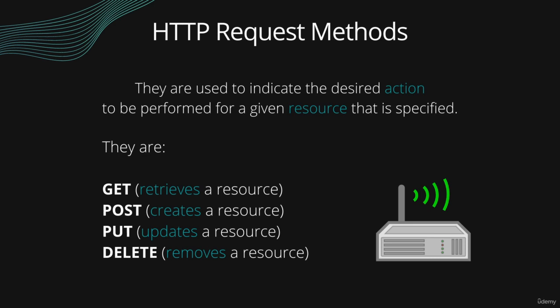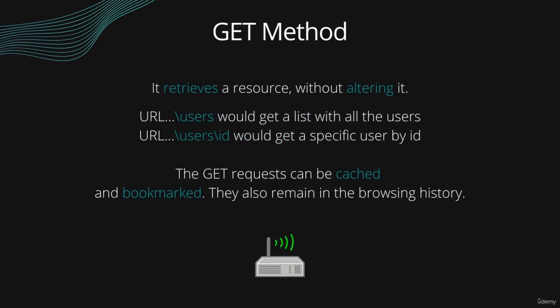Let's list all these methods. The main HTTP methods that you will run into are, first of all, the HTTP request method GET. This GET method is used to retrieve the data of a resource that is identified by an ID parameter, or a general list that contains all the elements of that given resource. For example, if a given URL has at the end of its path slash users, it is going to retrieve the entire list of users available in the database of that web server. But if it is slash users slash and then a number, which would be the ID of that user, it is only going to retrieve the resource that is a user identified by that respective ID you entered into the URL.